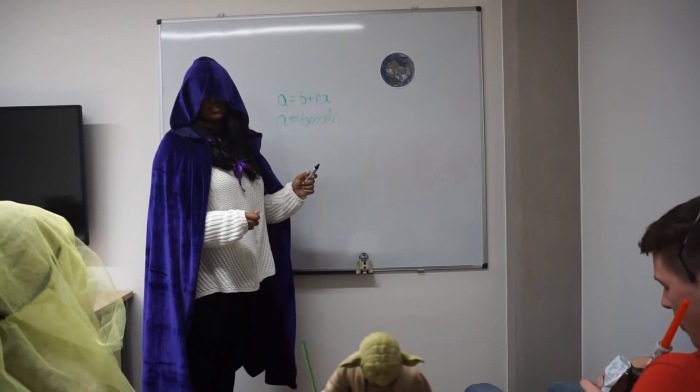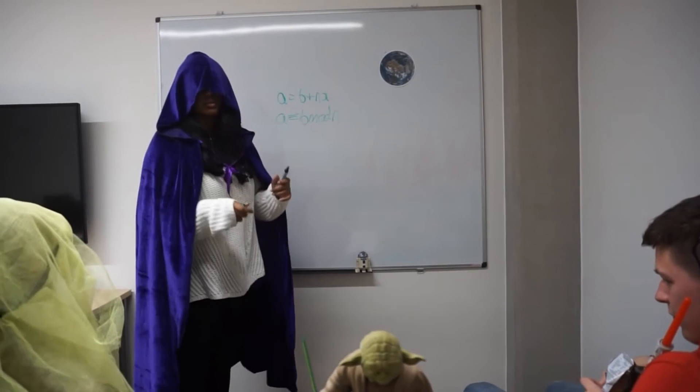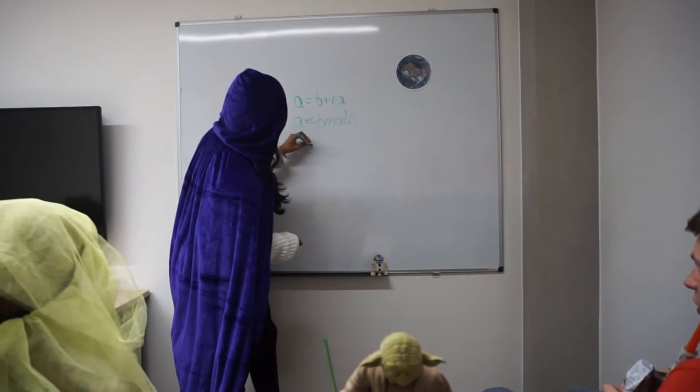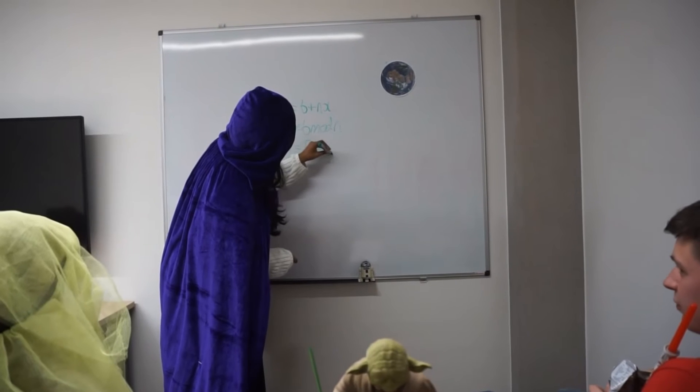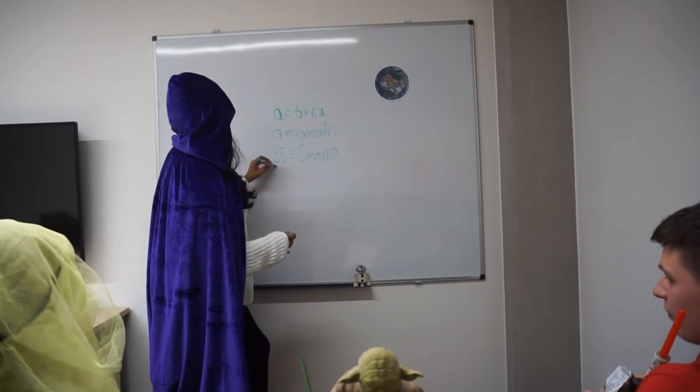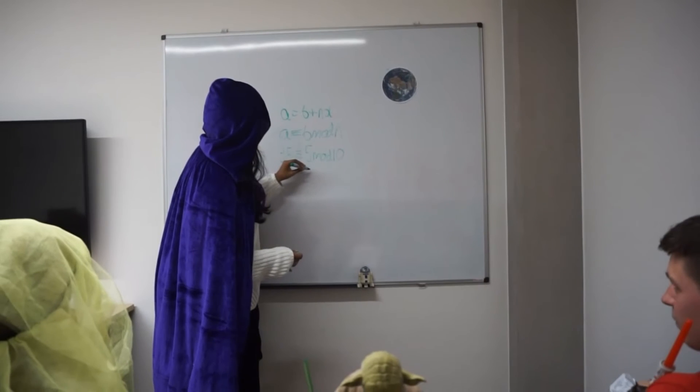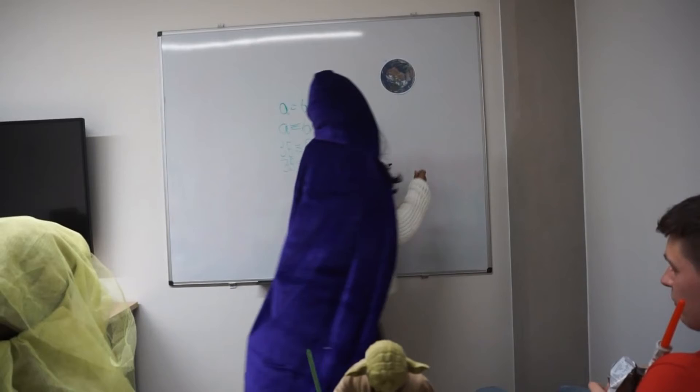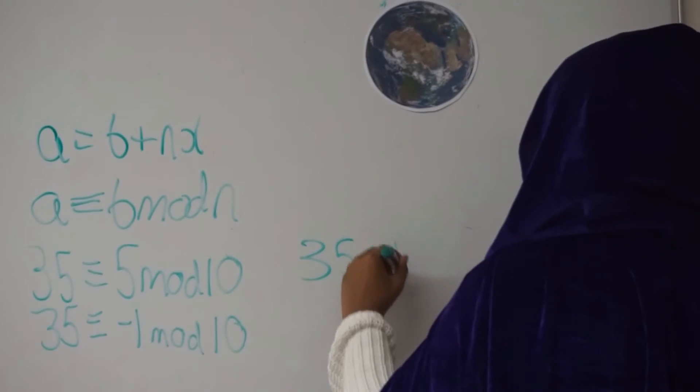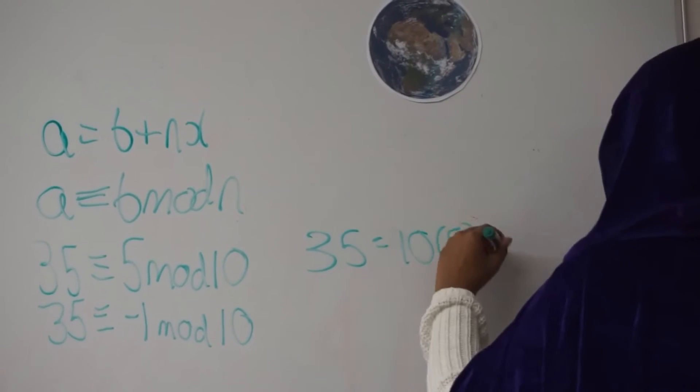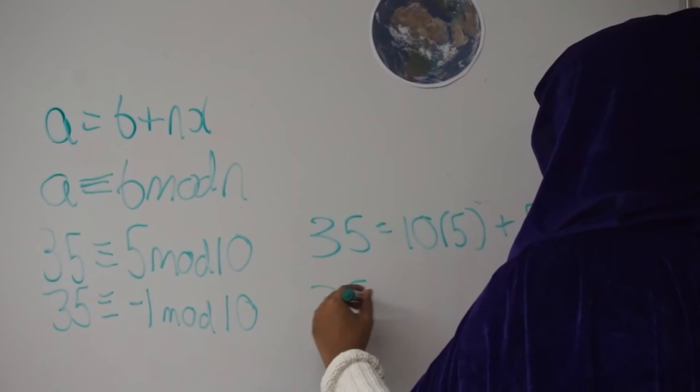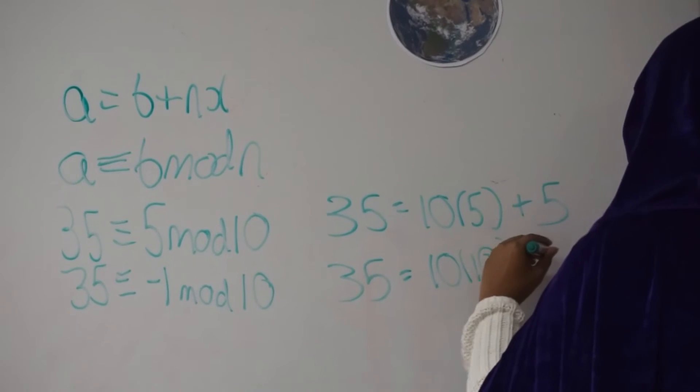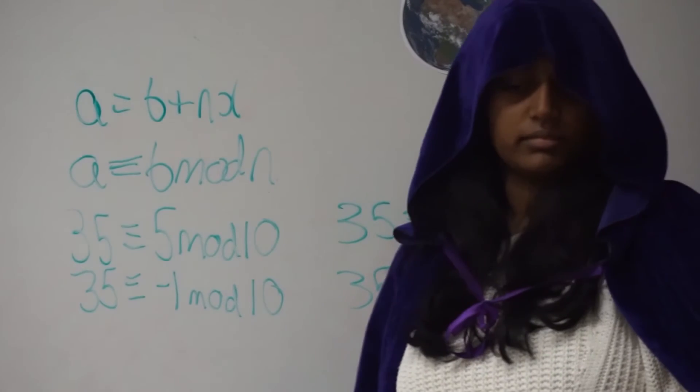For example, using the scenery system, this is how you guys count. We can say that 35 is congruent to 5 modulo 10. We can also say that 35 is congruent to minus 1 modulo 10. This is because 35 is equal to 10 times 5 plus 5 and 35 is also equal to 10 times 10 minus 1. I'm done.